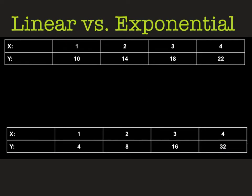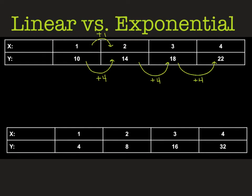To get started, we need to be able to determine the difference between a linear function and an exponential function. When we have our tables and we look at our y values, we want to see what's going on between one y value to the next. When we're looking at a linear function, it will all be added by the same value. So from 10 to 14, I add 4. From 14 to 18, again I'm adding 4. And from 18 to 22, we have another 4. Because all of these changes in our y's and our x's are going up by 1, this would be represented by a linear function.